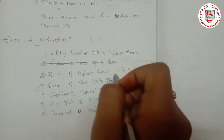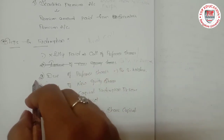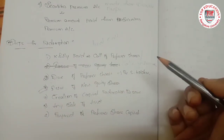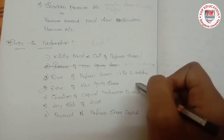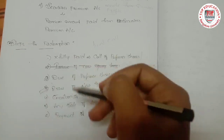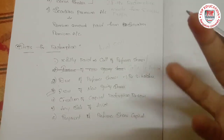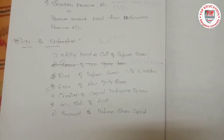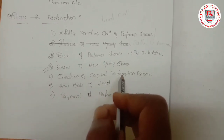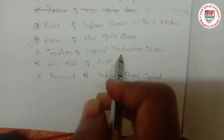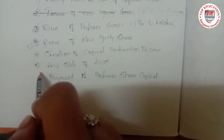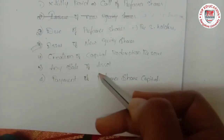The second step records the due payment to be made to preference shareholders. The third step covers the journal entry for the issue of new equity shares done for the purpose of redemption. The fourth step deals with the creation of the Capital Redemption Reserve — how it is created and to what extent it is created.